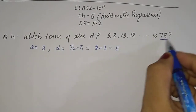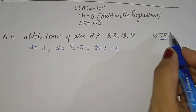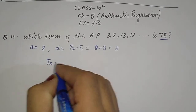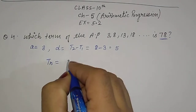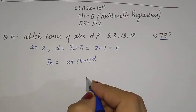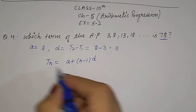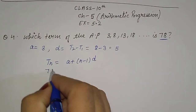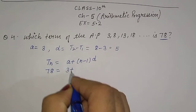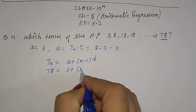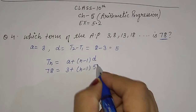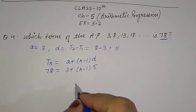We don't know which term 78 is, so we treat it as TN. TN is equal to A plus (N minus 1) into D. So TN we let equal 78, A is 3, plus (N minus 1), and D is 5. We need to find N.